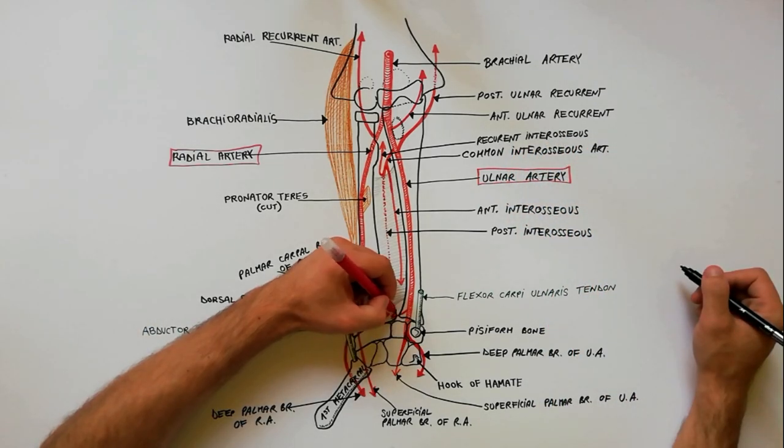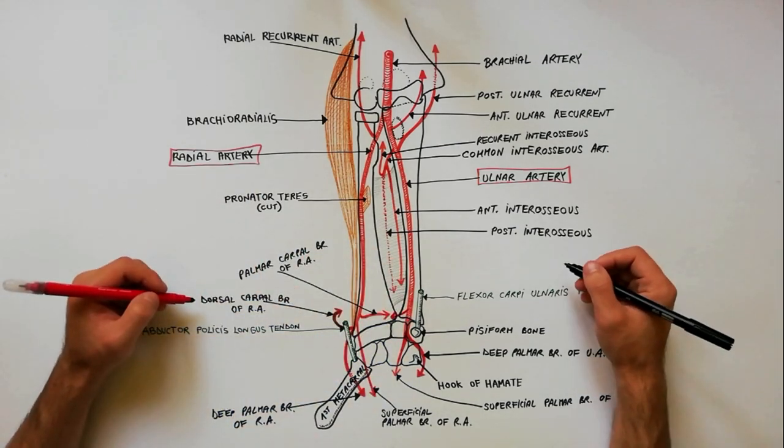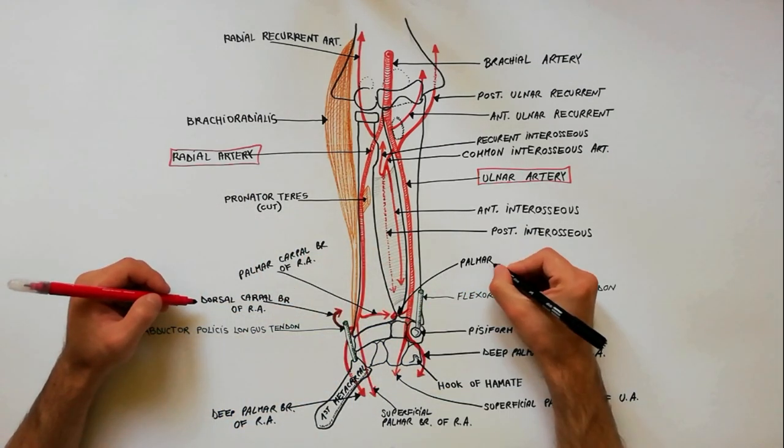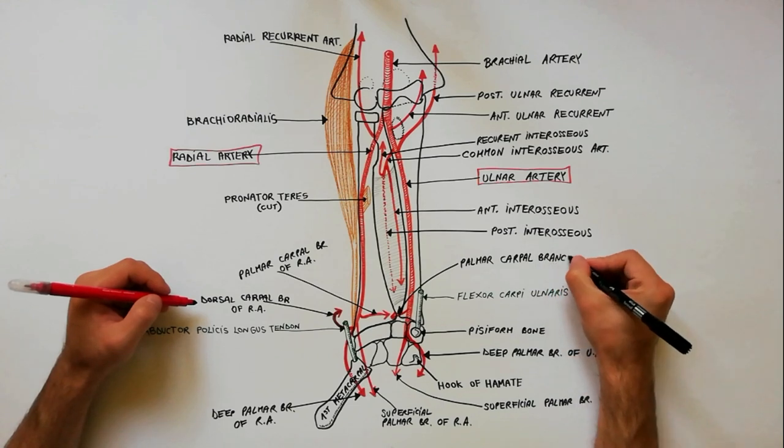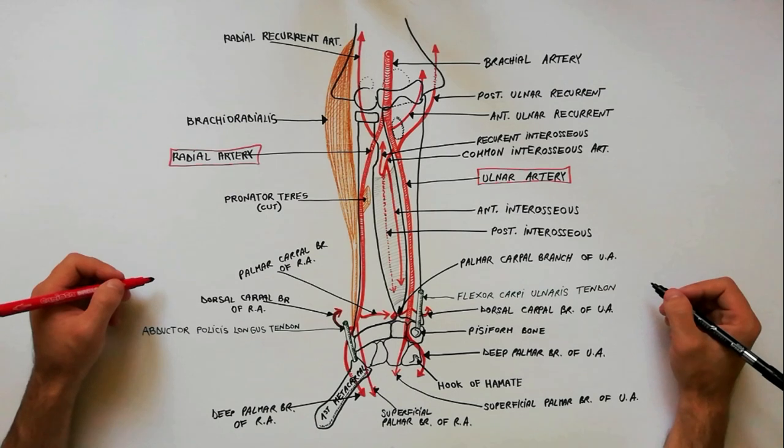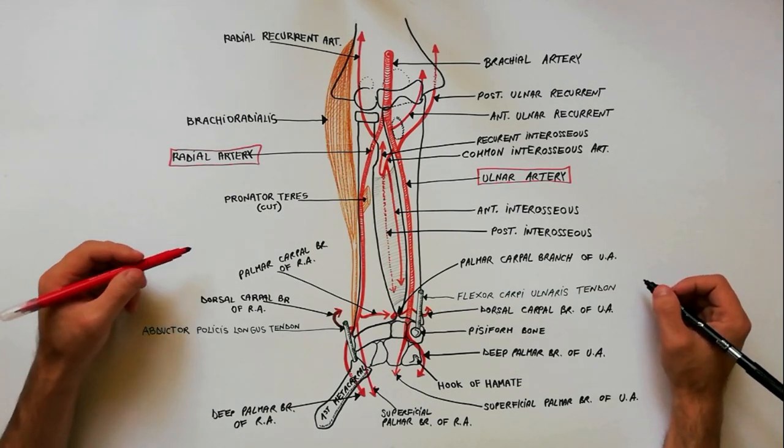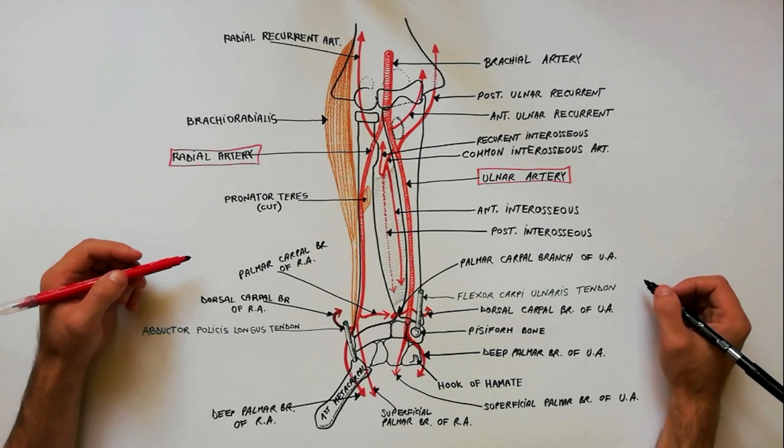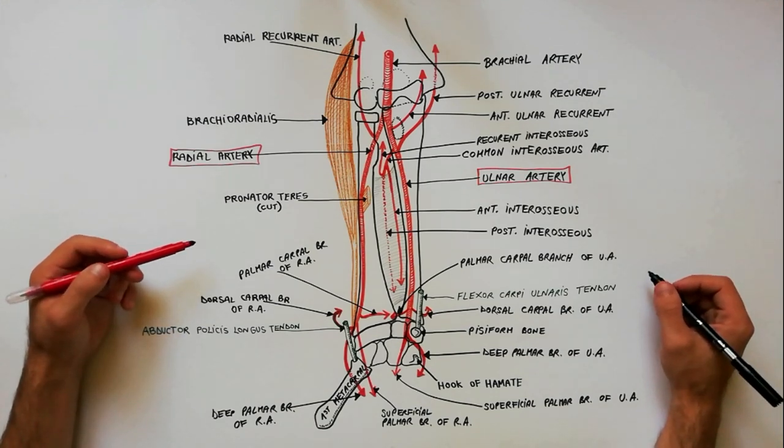At the level of wrist, from the ulnar artery are arising the palmar carpal branch of ulnar artery and the dorsal carpal branch of ulnar artery. These arteries will anastomose on the anterior and posterior aspects of the wrist with the corresponding branches of the radial artery.